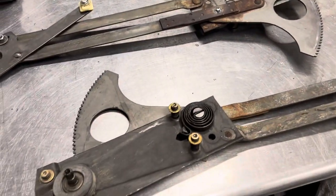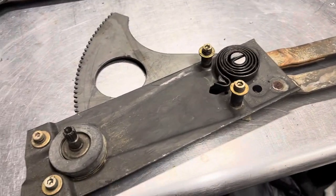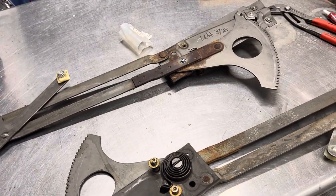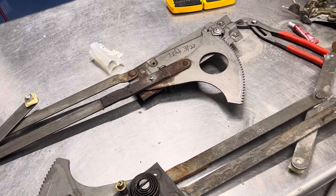Anyway, that's how you rebuild the window actuator on '70s F G-body 911s. And thanks for watching.